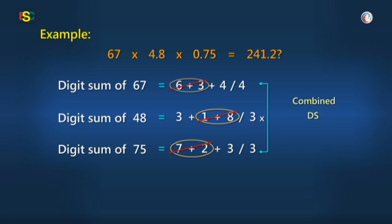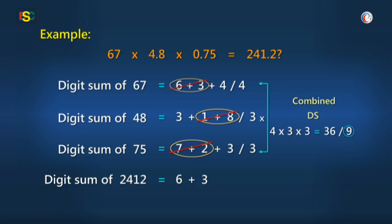And now, multiplying them, 4 into 3 into 3 is 36, or its digit sum is 9. Then, sir, 2412's digit sum is 6 plus 3, that is 9. And it is matching with our combined digit sum.